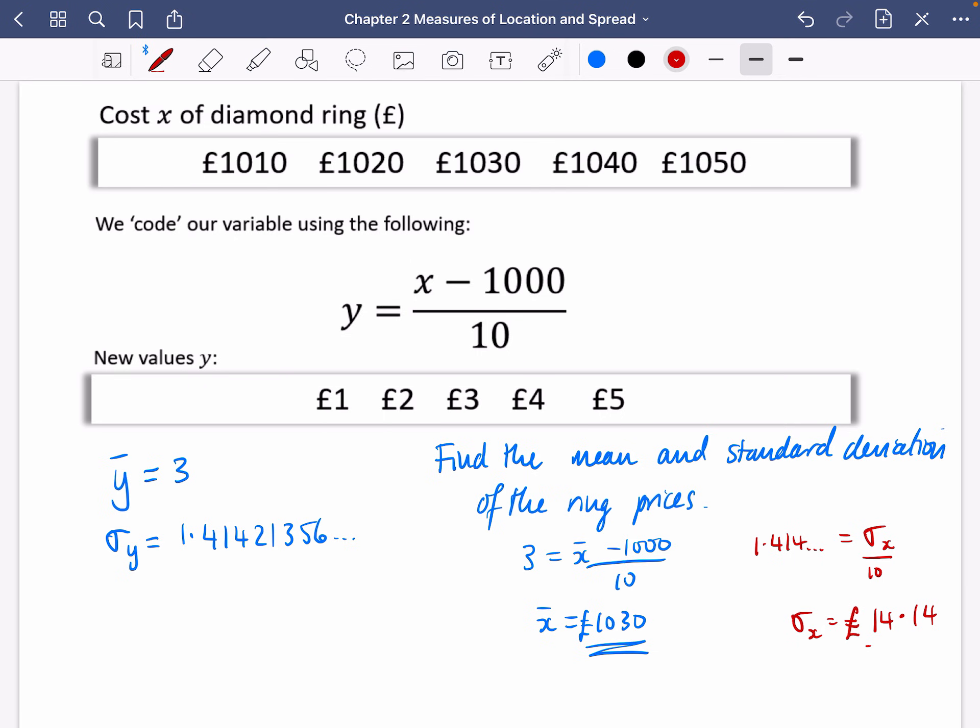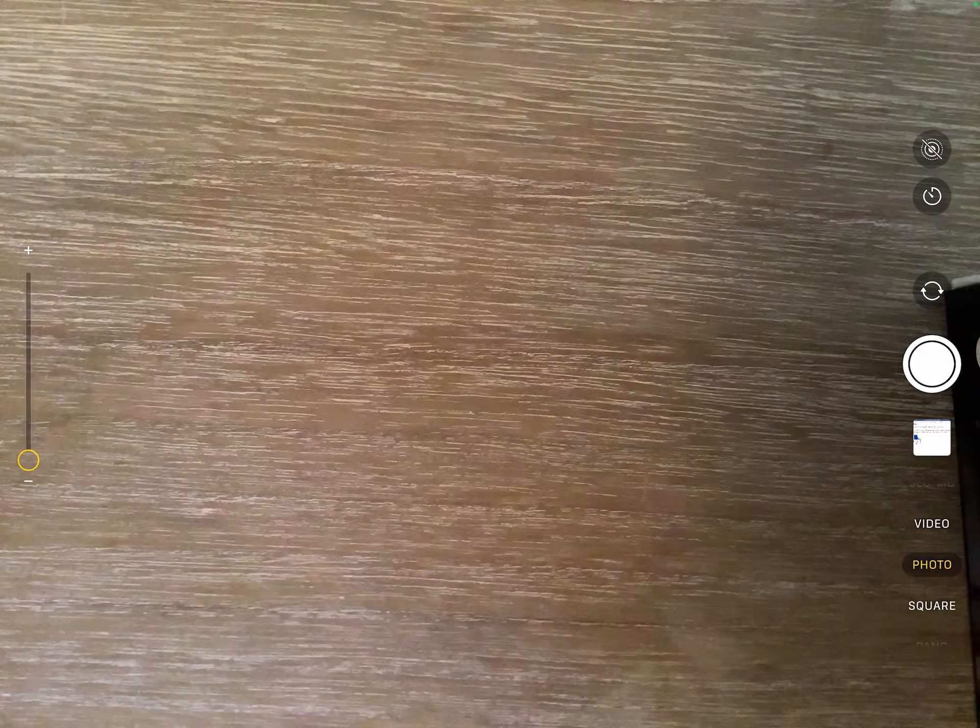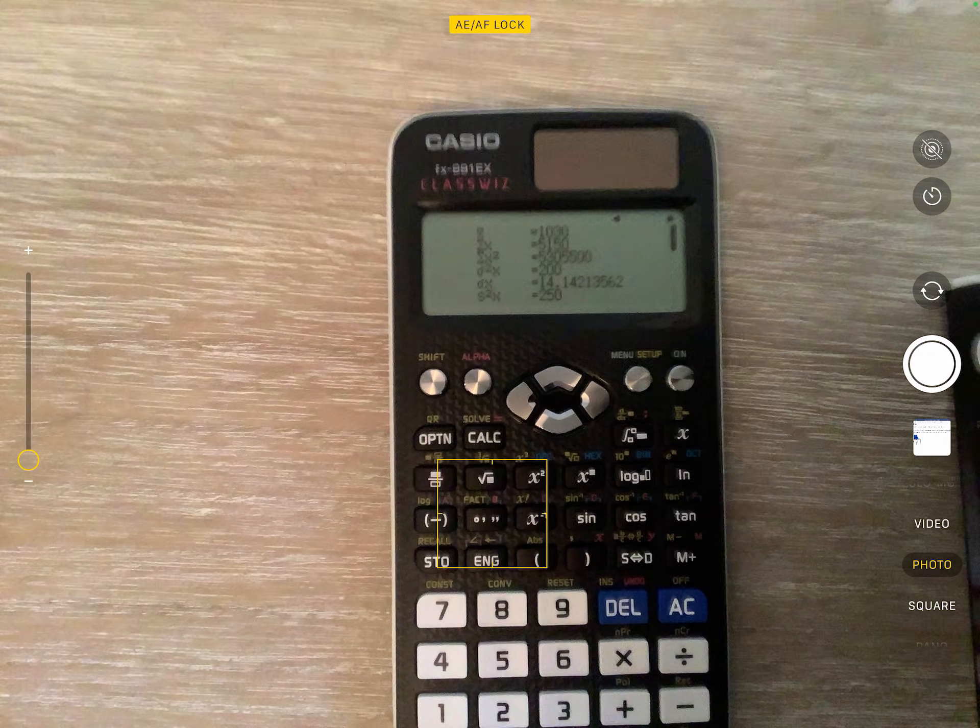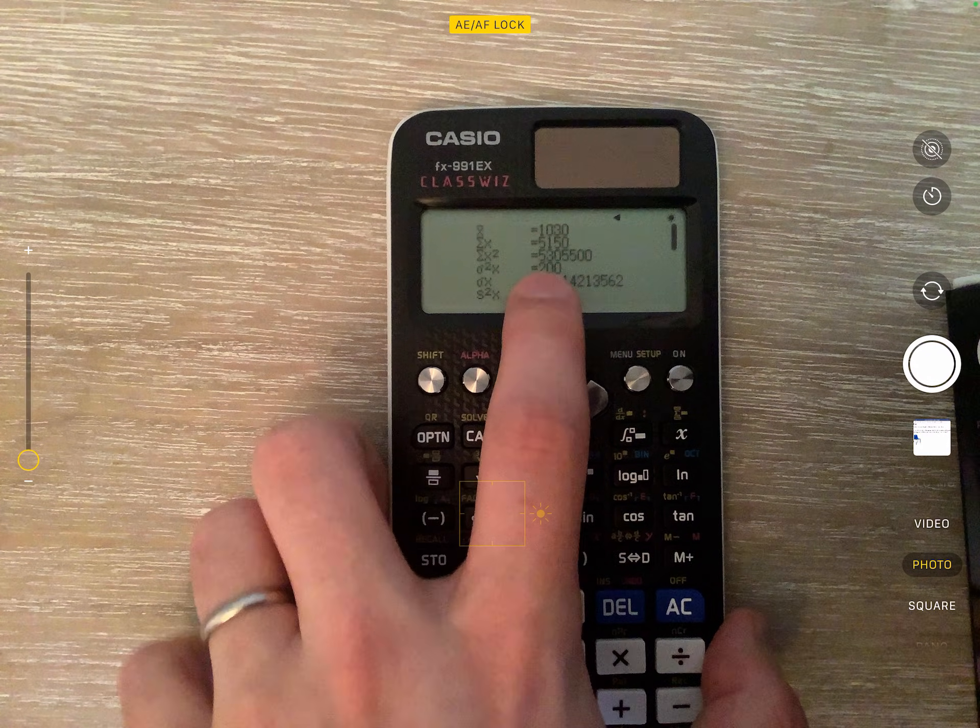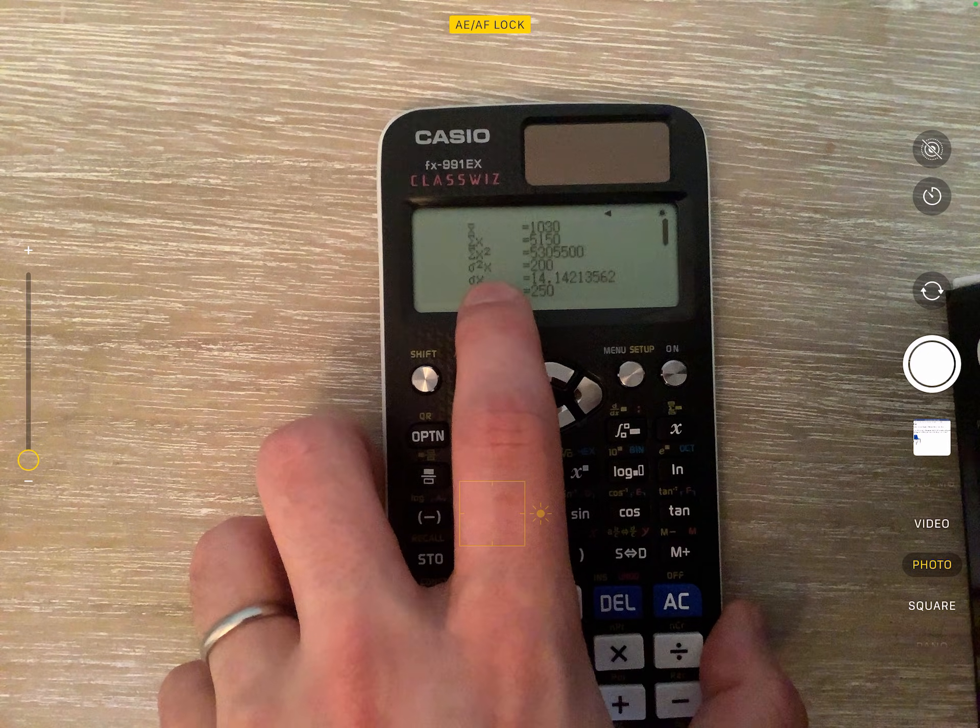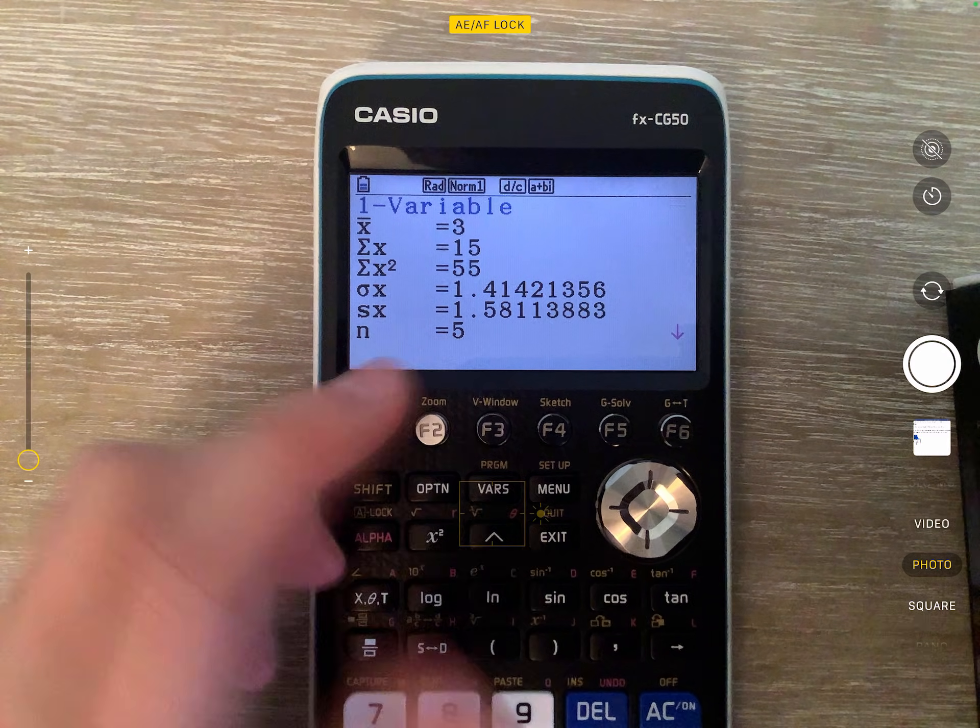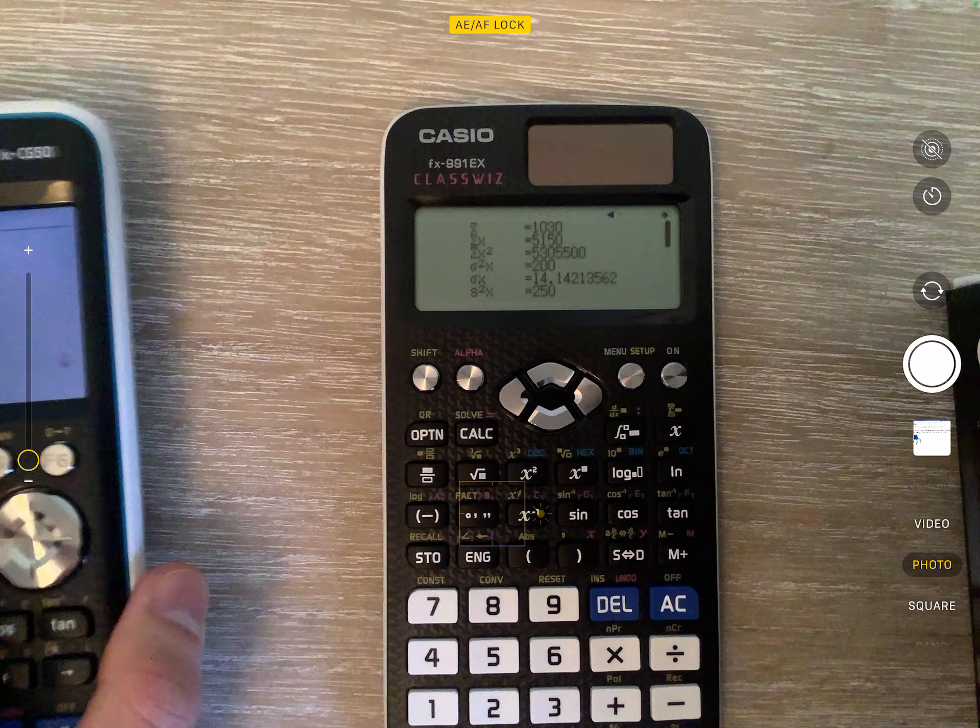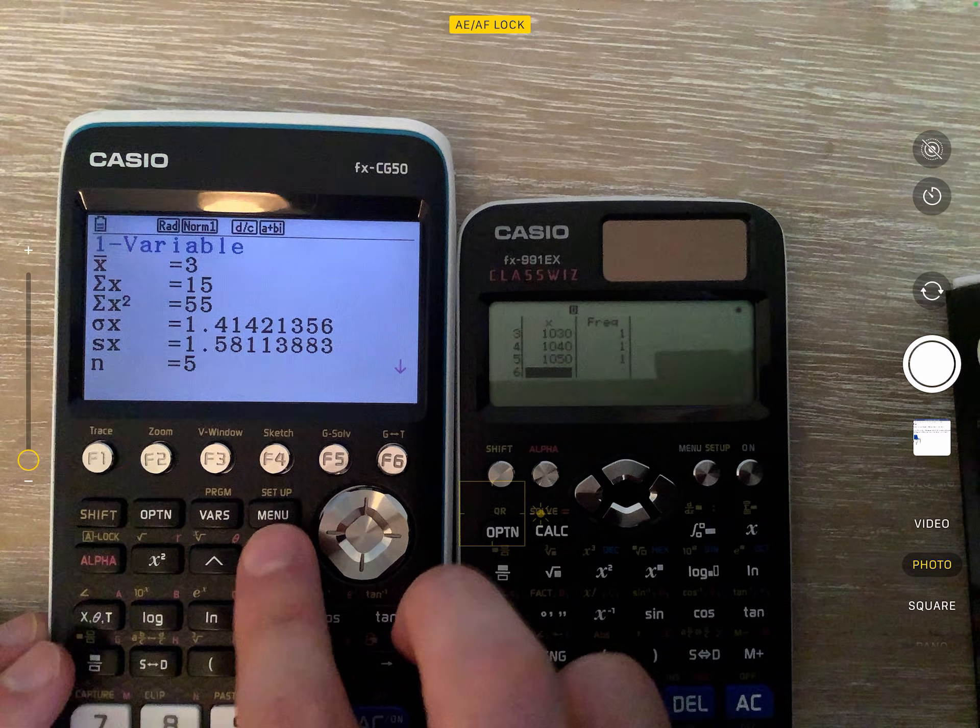So what I'm going to quickly do is I'm just going to show you how this looks on the calculators. So I've already typed in the data for both of them. Let's go to the camera. So for the original ones, this is for the x bar values that we've got here. You can see that we got the average was 1,030 and that we got 14.14 for the value of the standard deviation. And you can see this was for the non-coded data. We've got that the average was 3 and that the standard deviation was 1.41.